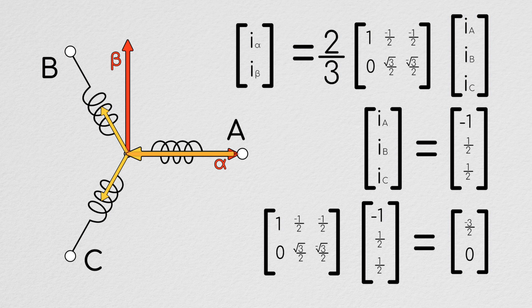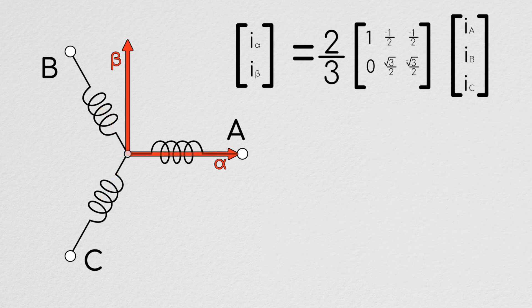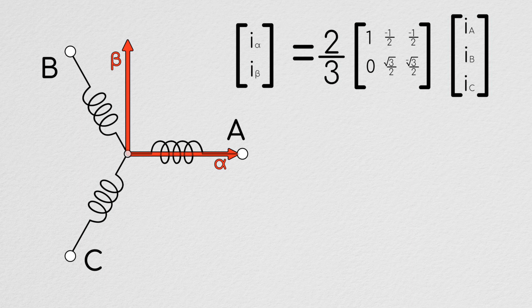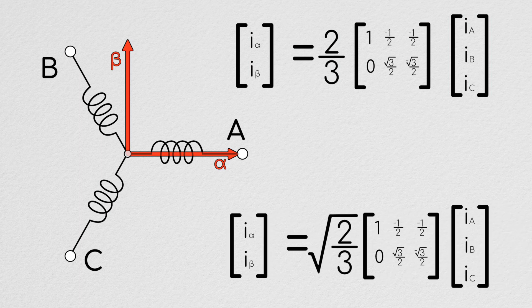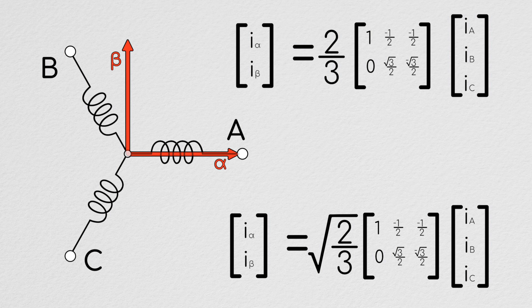And just so you aren't confused if you see it, there's actually two forms of this transformation. The one I'm using here, which is the vector magnitude invariant version, and another version used for power analysis, which is the power invariant version, and it uses the square root of two-thirds instead of two-thirds.